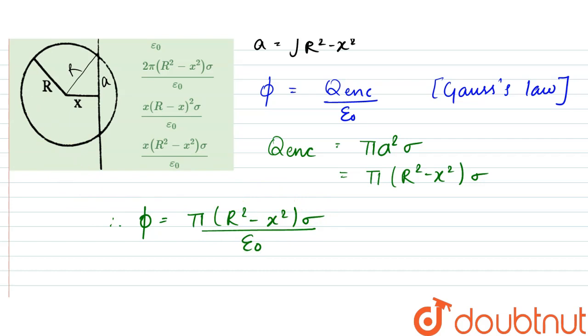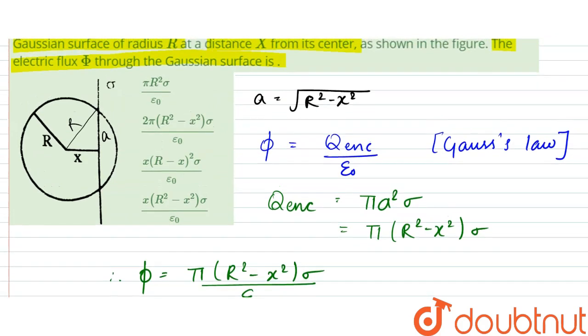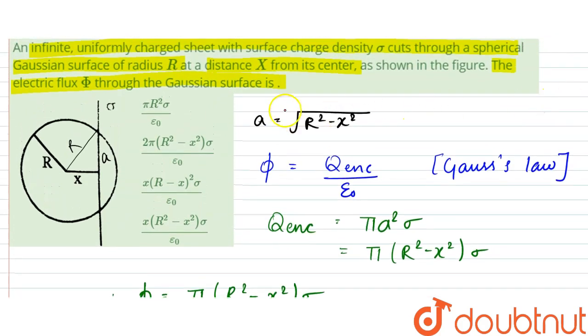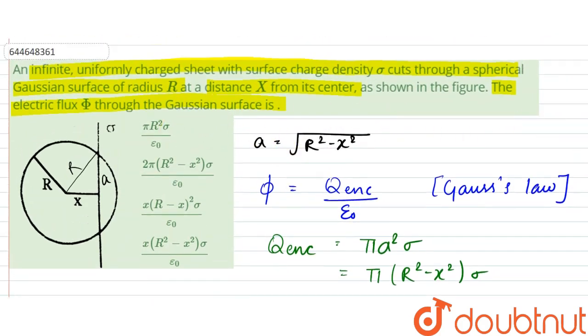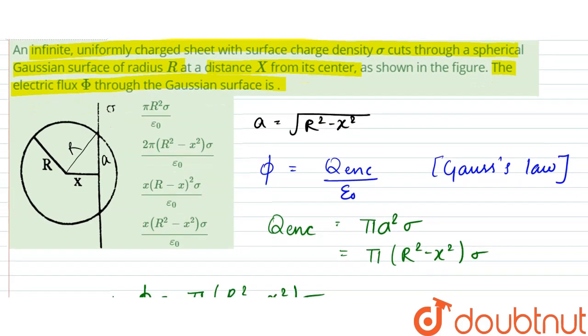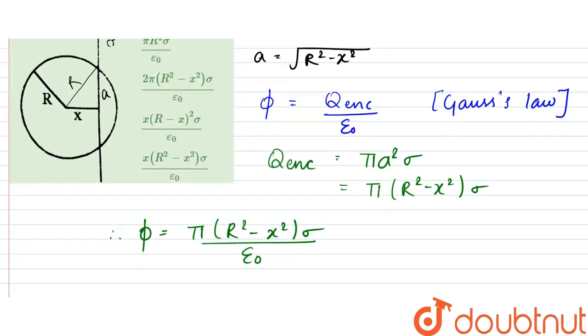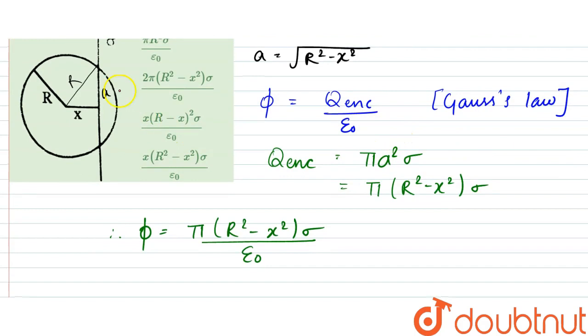So that would be the flux passing. Since the area is pi a squared for this, into sigma. Why? Because sigma is given to us as charge density, the surface charge density. So the area which is inside this is pi a squared, so due to that it would be this much.